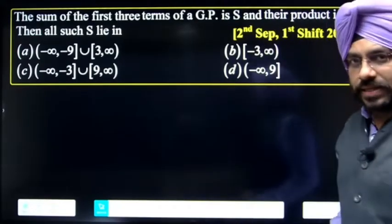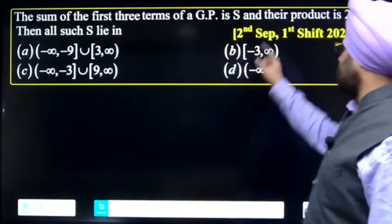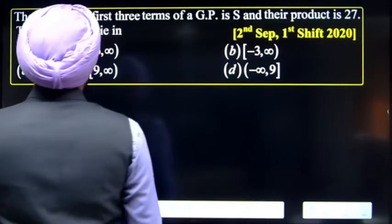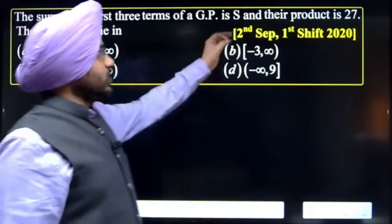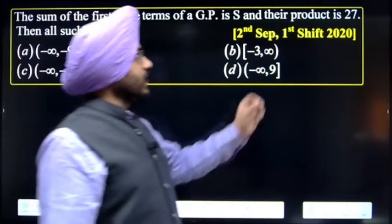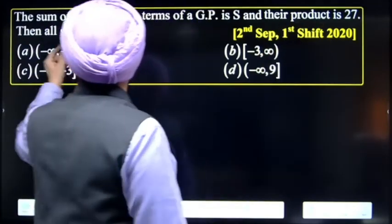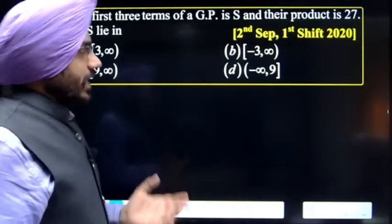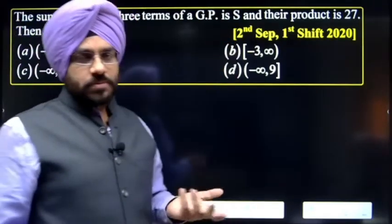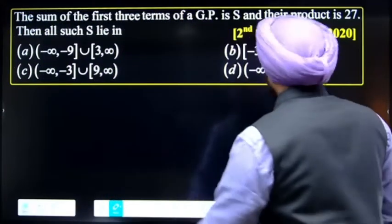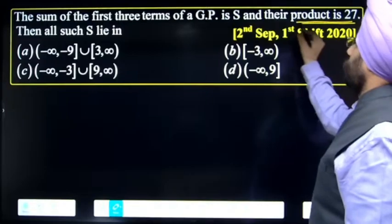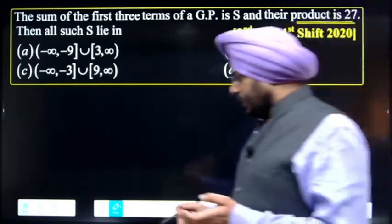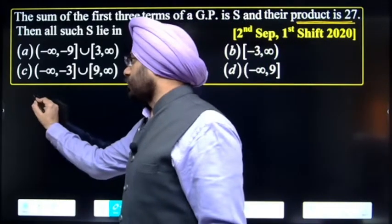Hello students, we discuss a GP question from 2nd September 1st shift 2020. The sum of the first three terms of a GP is S and their product is 27. We need to find all values that S lies between. If the product is given, we select terms for GP using a specific selection method.